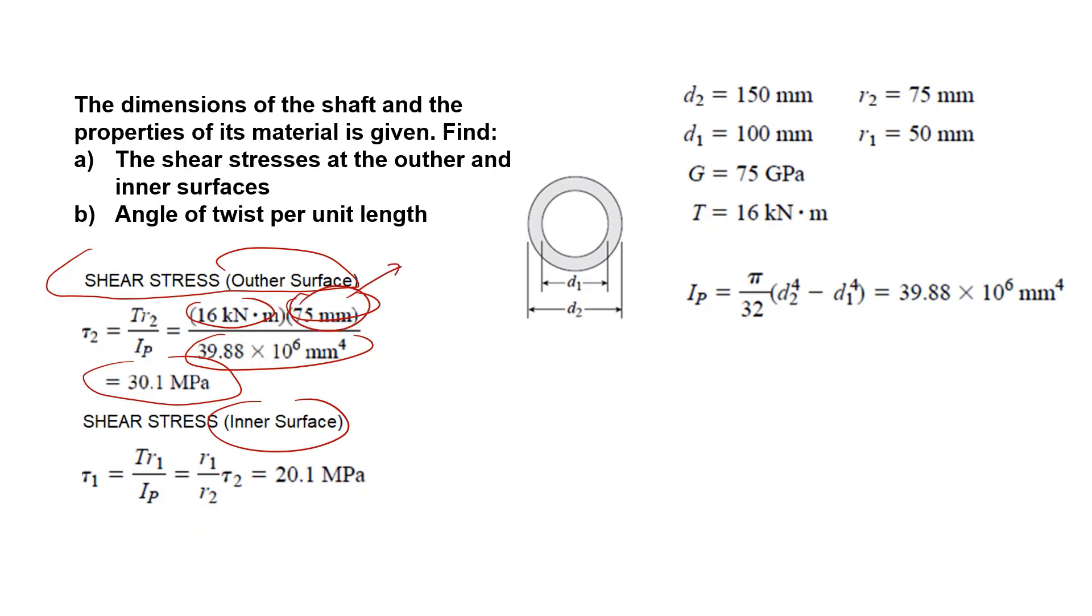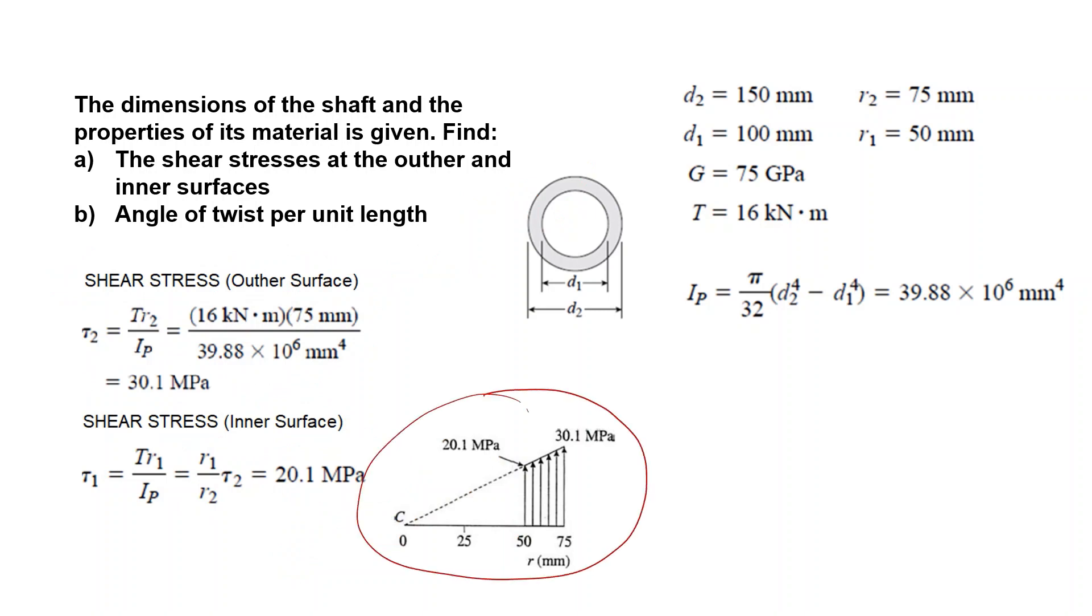For the inner surface, you can take instead of 75, 50 millimeters and calculate and find the new stress value. Or you can do the following: we know that the stress distribution is linear. You know the stress at 75 which is 30.1. You can calculate this value by multiplying that 30.1 with the ratio r1 over r2, that is 50 divided by 75 times 30.1, and you will get the shear stress value as 20.1. This is how the stress distribution will look like: at 50, 20; at 75, 30.